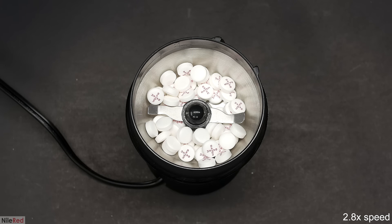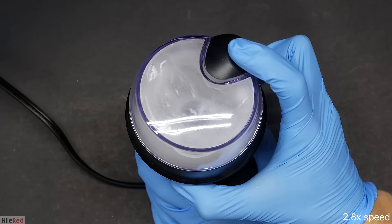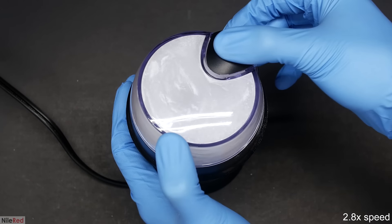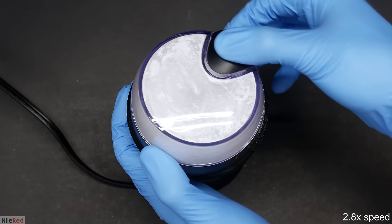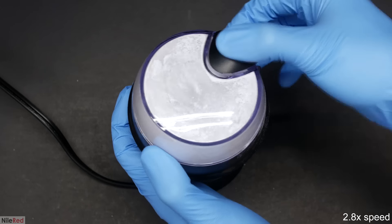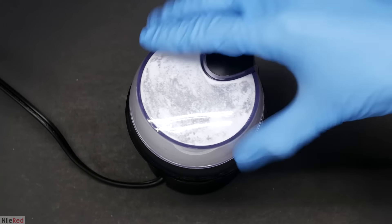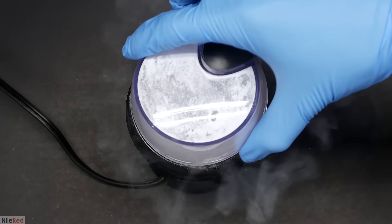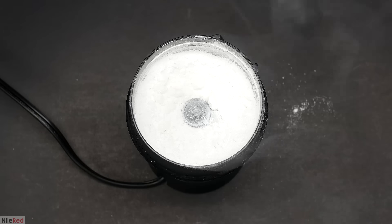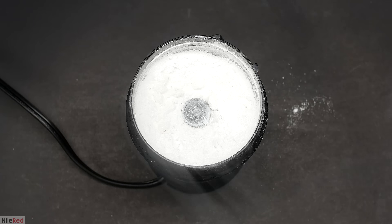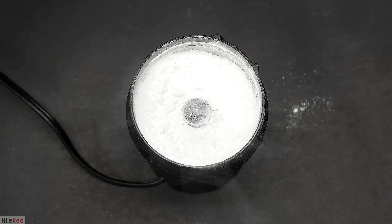To get things started, I need to powderize all of the pills, and to do this, I use a coffee grinder. Of course I could have also just smashed them with a hammer or something, but it's just a lot easier this way. When it's done, I take off the lid, and you can see a whole bunch of powder shoot out. It's important to avoid breathing this, because it's really not healthy for your lungs.